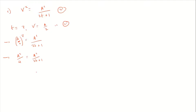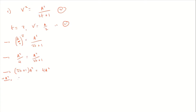Bringing 2b + 1 to the top and bringing the 4 up as well: (2b + 1)a² equals 4a². Since a² cannot be zero I can divide both sides by a², leaving 2b + 1 equals 4. Taking off the one and dividing by two gives b equals 1.5, or three over two.